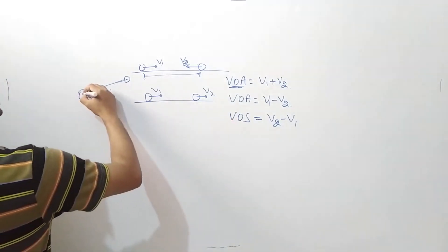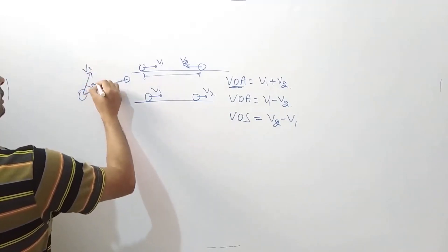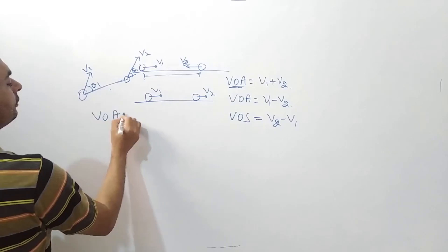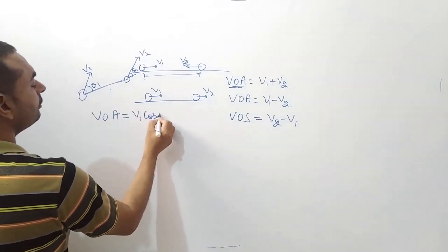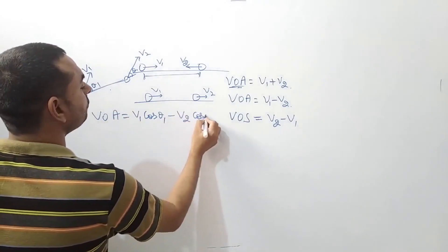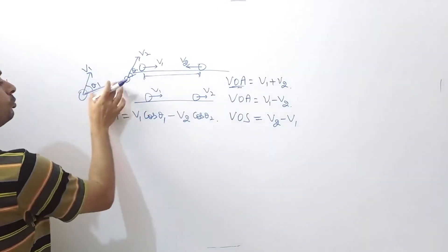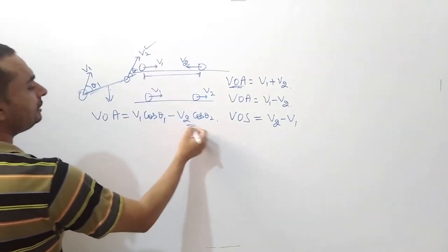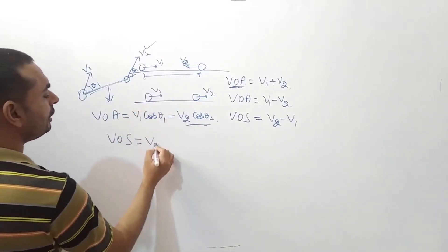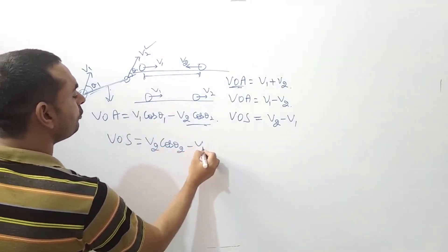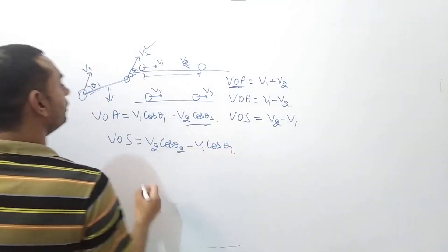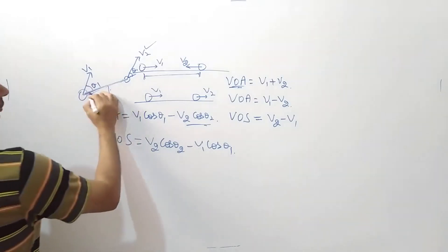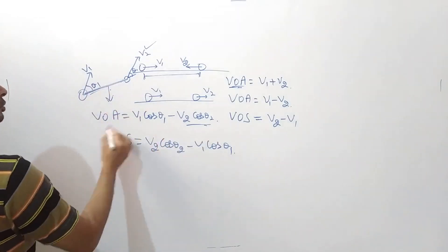We call it velocity of separation. This is theta 1. Velocity of approach — this is theta 2. Velocity of approach is V1 cos theta 1 minus V2 cos theta 2, because along the line joining the two. Velocity of separation is along the line joining the two as well.